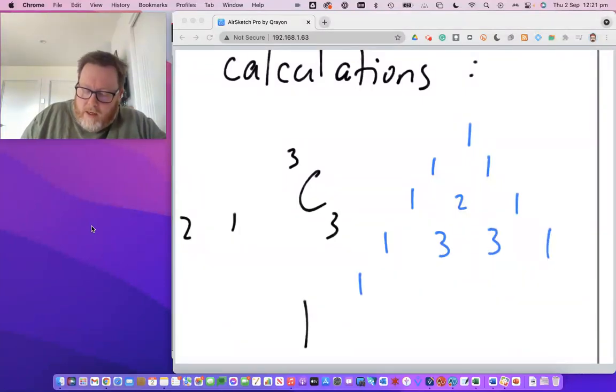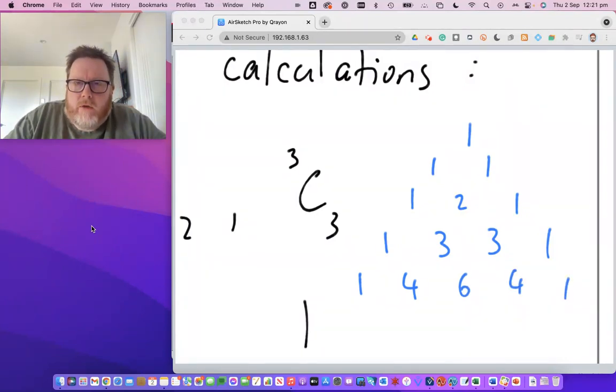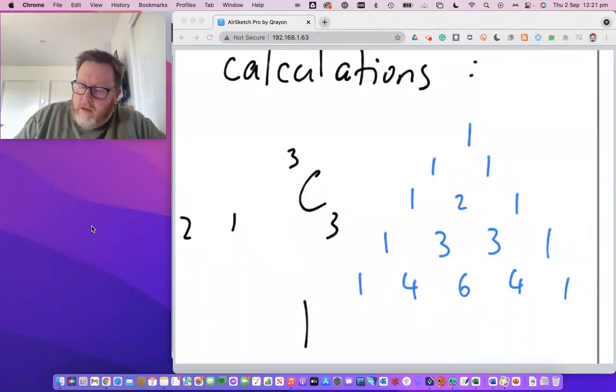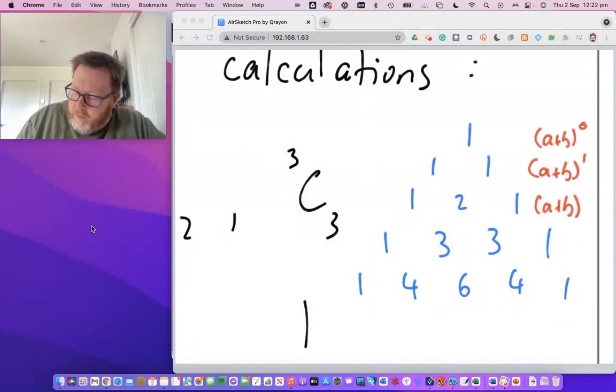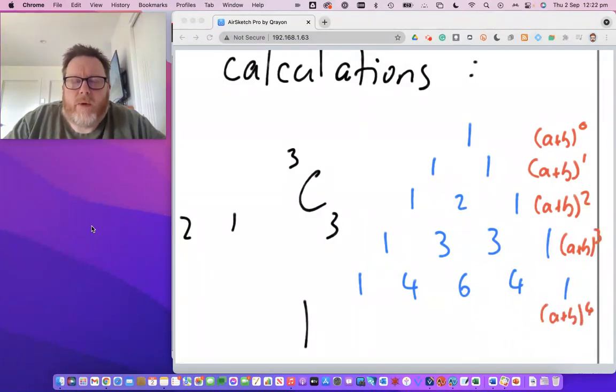1, 4, 6, 4, 1 and so on. You can do Pascal's triangle for as long as you want and in every instance the row gives you a plus b to the power of whatever row number it is starting from row 0. So this is a plus b to the power of 0. This is a plus b to the power of 1, which would be a to the power of 1 plus b to the power of 1. This would be a plus b to the power of 2, a plus b to the power of 3, a plus b to the power of 4 and so on.